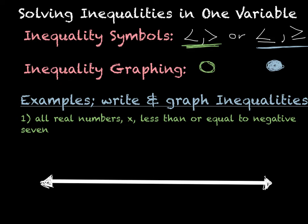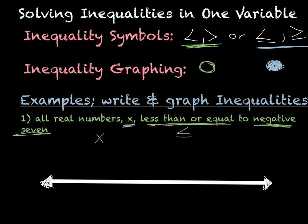For this first one, all we want to do is write the inequality and then graph it to make sure we get our symbols right. All real numbers x less than or equal to negative 7. So I write x less than or equal to negative 7. That is my inequality. Now I need to graph that.